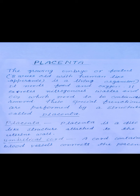अगर question आता है एक marks का — What is placenta? — तो आप उसकी definition में लिखेंगे: Placenta is a disc-like structure attached to the uterine wall. And the umbilical cord — a cord containing blood vessels — connects the placenta with the fetus. Placenta से connect blood vessels एक cord जिसमें blood vessels होते हैं वो placenta और fetus दोनों के साथ attached होता है.